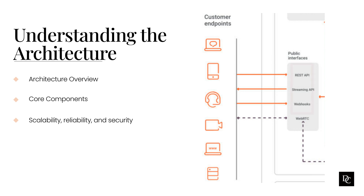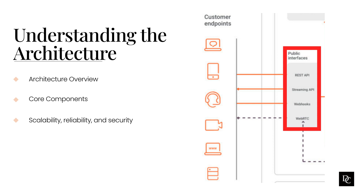Public Interface Services: All information that goes to or from Genesis Cloud passes through a gateway of public interface services. This includes phone calls, chats, documents, profile data, integration data, and admin configurations.